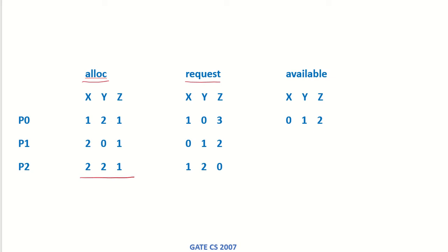If we know how many are allocated: five of X are already allocated (1 + 2 + 2), four of Y are allocated, and three of Z are already allocated. So what are the available resources right now? By subtracting the allocated from the total, we get five minus five equals zero, five minus four equals one, and five minus three equals two. So the currently available resources are 0, 1, and 2.